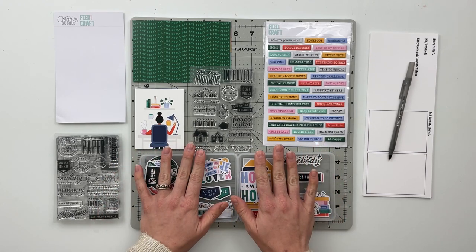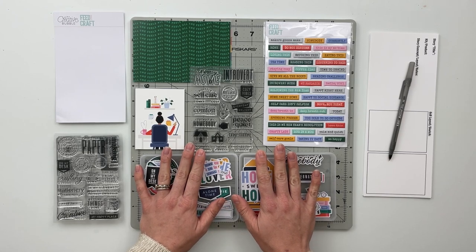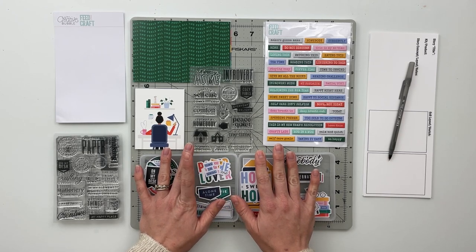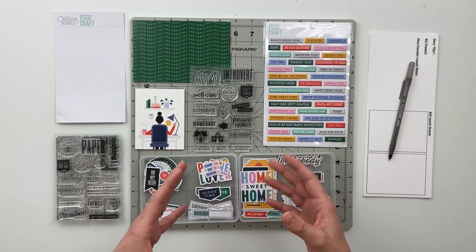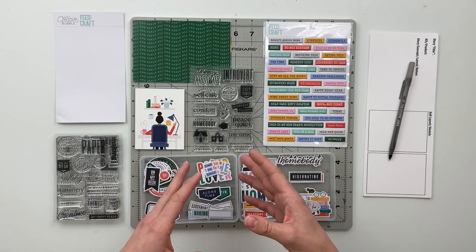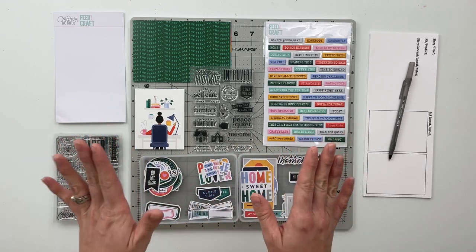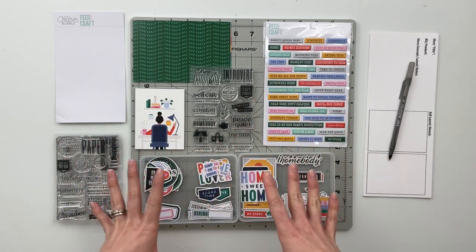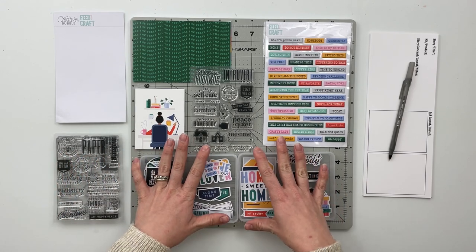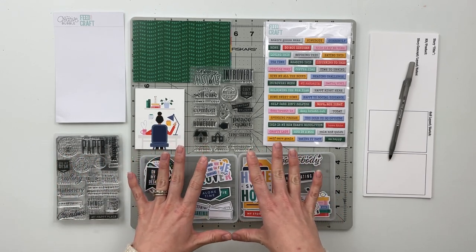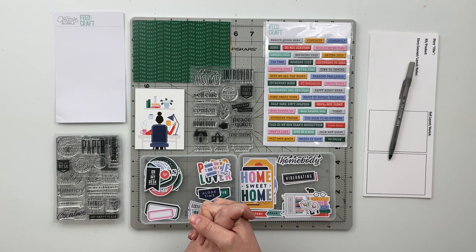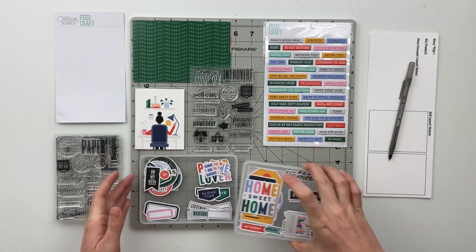So this kit is really awesome. It's about all things being at home, being cozy, being kind of an introvert and a lot of things that go along with that - books and cooking and all the things. What we're going to do first is go ahead and go through all of the product that comes in the main kit and then there are also a couple of add-on stamps that I would love to share with you today as well.